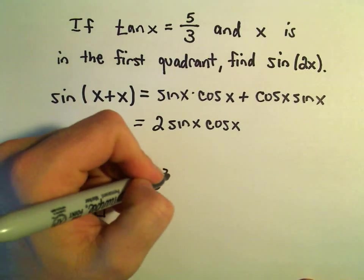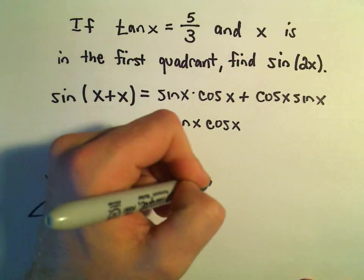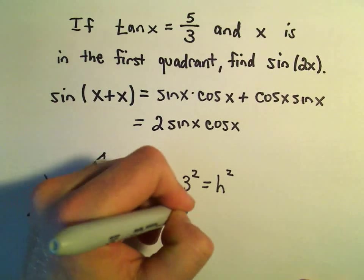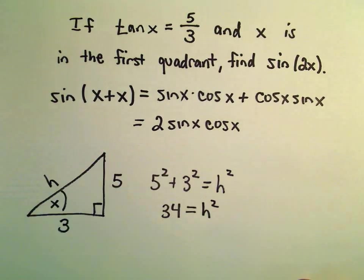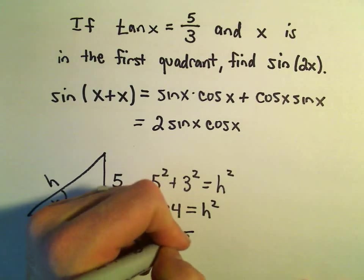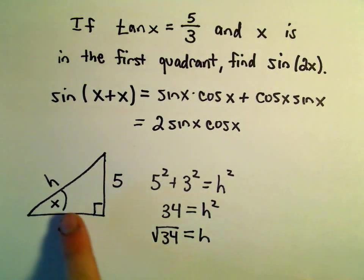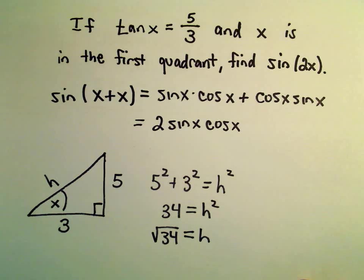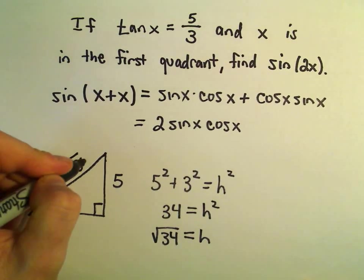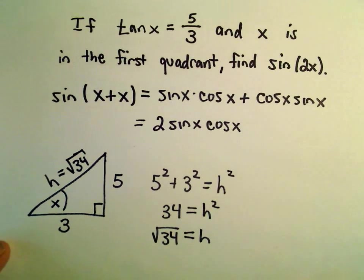Well, 5 squared plus 3 squared would equal h squared. This is going to be 25 plus 9, which is going to give us 34. And then we can simply take the square root of both sides. Again, normally you get positive and negative, but I'm realizing that we're talking about the hypotenuse, so I'm just keeping the positive solution. So we've got the square root of 34 as the length of our hypotenuse.